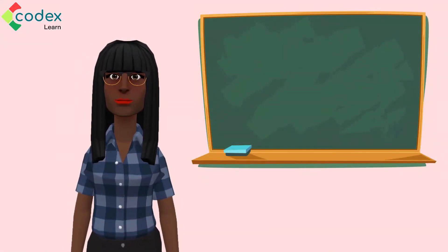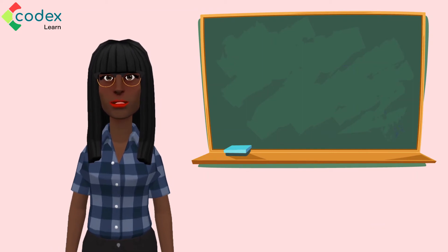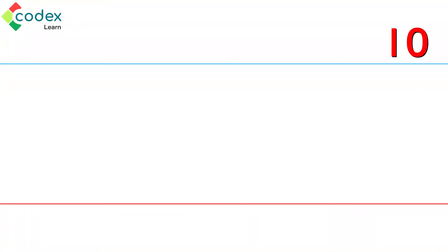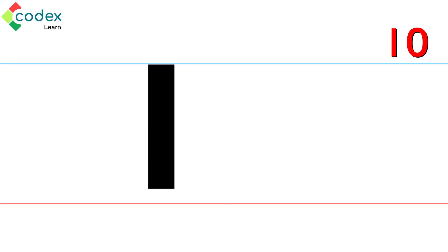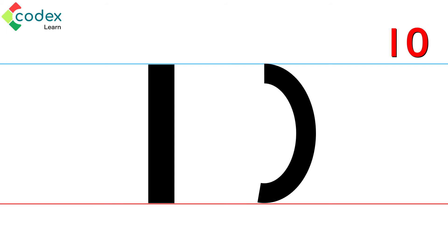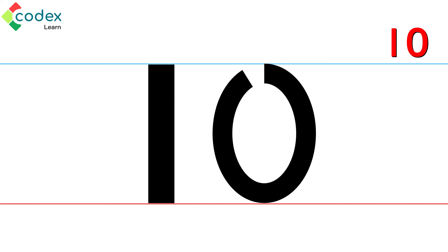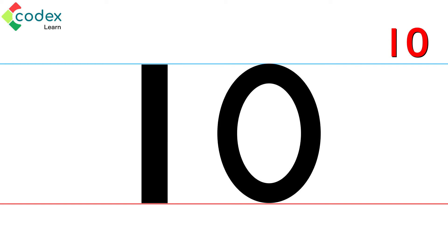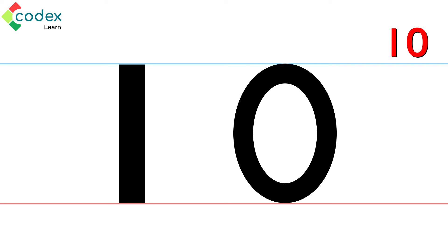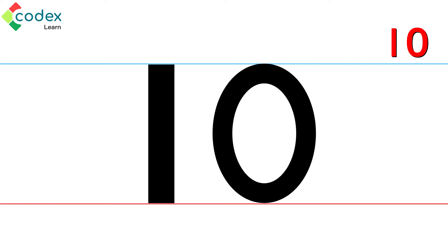It is easy to write out the number 10. First, write out number 1, like I have here. I have 2 lines to help me do it: 1 blue, 1 red. Can you see the first number? Use 1 stroke to write number 1. Start at the blue headline, pull down to the red baseline. Here is the second number, 0. Start from a point at the top. Turn around all the way to the left until you get back to the point you started. Can you see how easy that was? When you write the number 10, make sure that the digits 1 and 0 are close enough together so that everyone can see that the number is 1 number and not 2 different numbers.